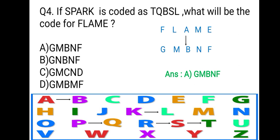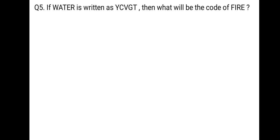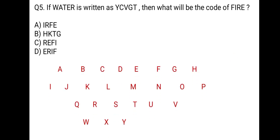Now, let's have one more question on the same type. If WATER is written as YCVGT, then what will be the code of FIRE? And these are the options. Again, you have to write down the A, B, C, D in your notebook. Now, understand how WATER is coded. W is coded as Y. Meaning, in forward direction skipping one letter, the next letter is given in code.